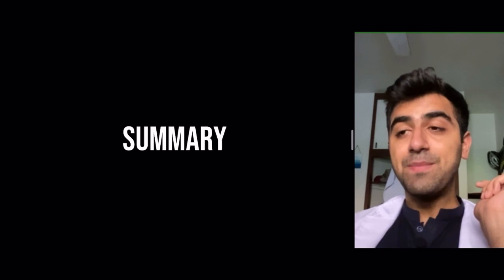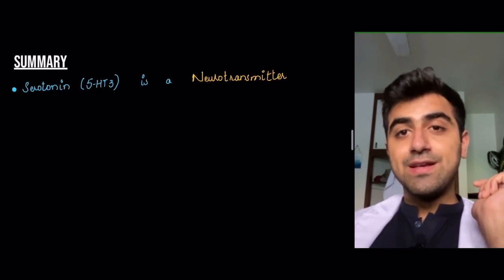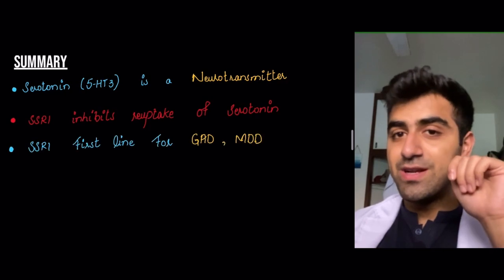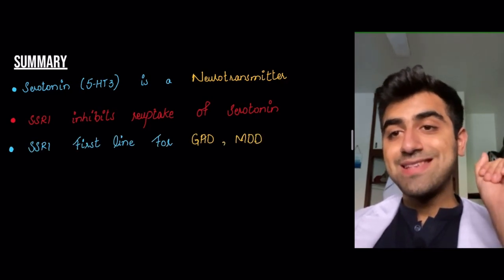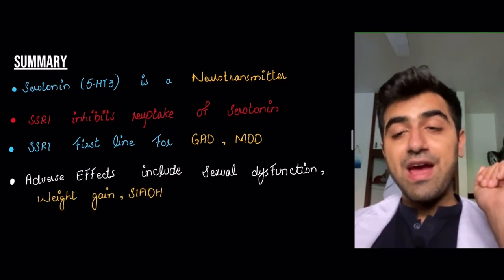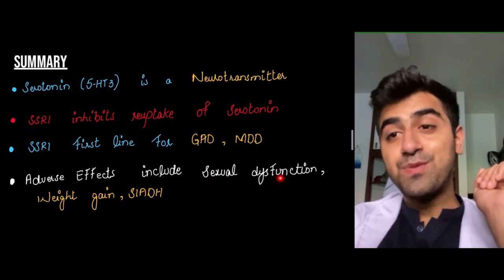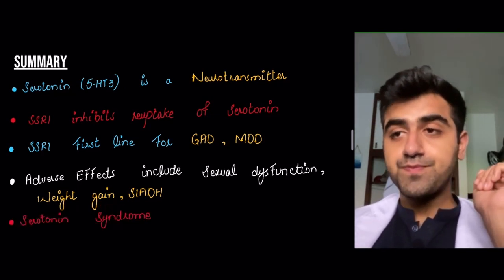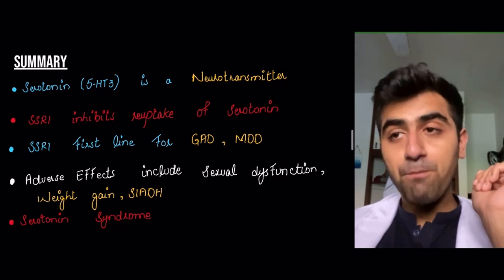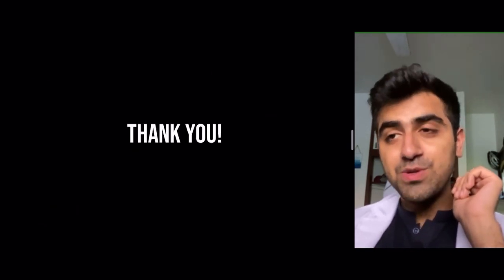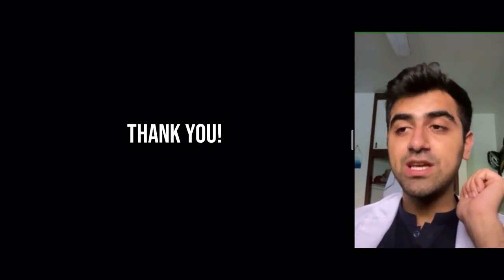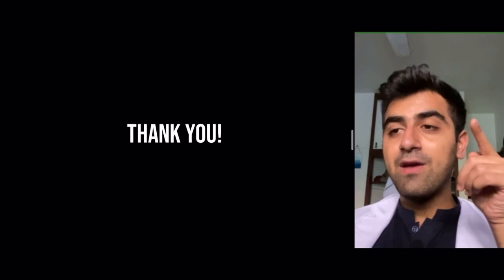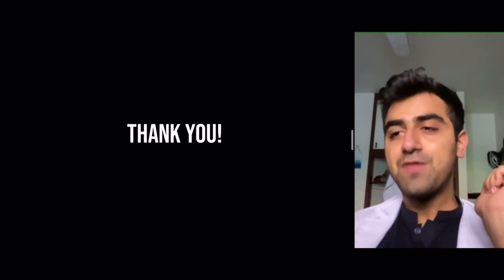In summary, SSRIs are first line for generalized anxiety disorder and major depressive disorder. Adverse effects include sexual dysfunction — which is why SSRIs are also prescribed for premature ejaculation disorder — weight gain, SIADH, and serotonin syndrome, which is a very important adverse effect to remember. Thank you for watching. This video is part of our series on psychiatric pharmacology — please subscribe and press the bell icon.